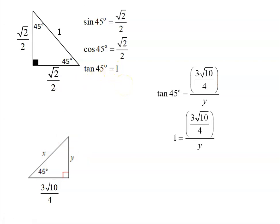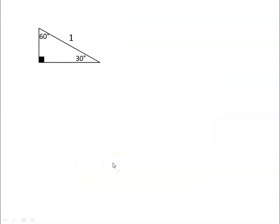When I cross-multiply, I just get that y is exactly equal to 3 root 10 over 4. I could have also just said that because this is an isosceles triangle, these two have to be equal. So those are the exact values.